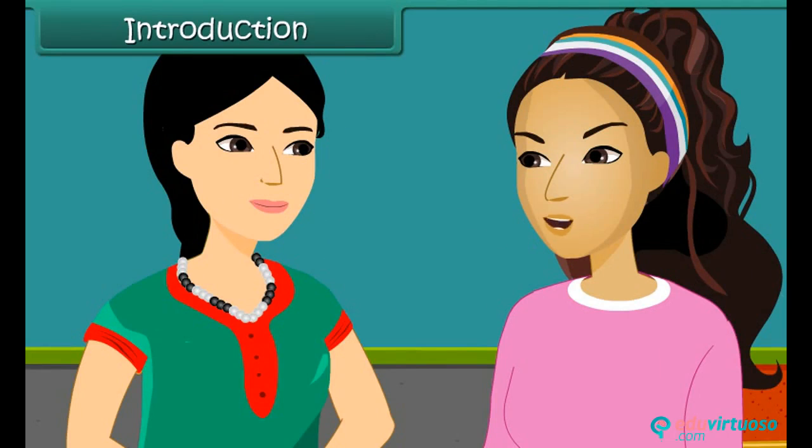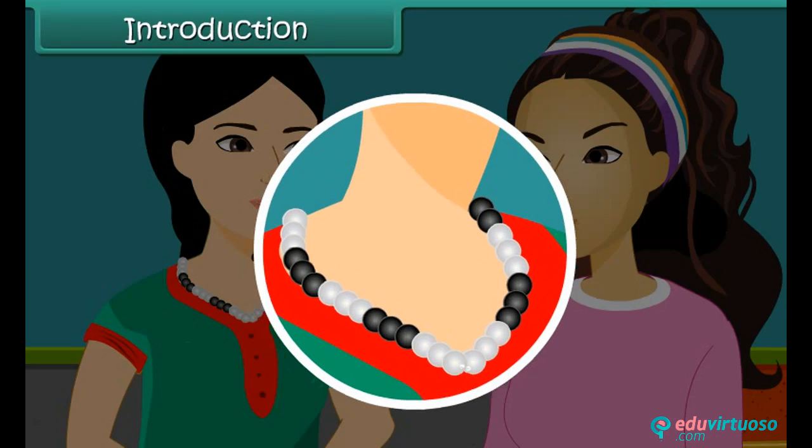What a beautiful pearl necklace! If you notice, there are three white pearls and three black pearls and so on and so forth. Looks like they are arranged in a particular sequence or pattern. Let us learn more about pattern today.